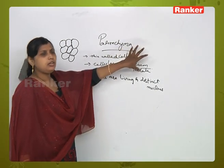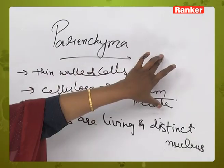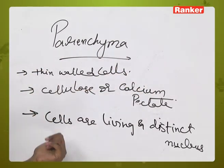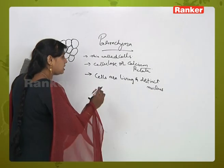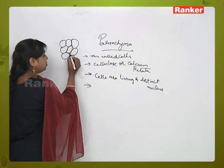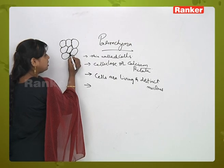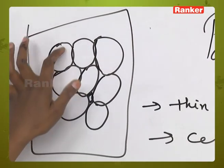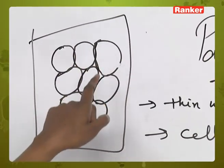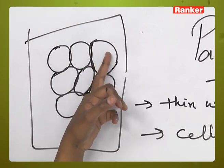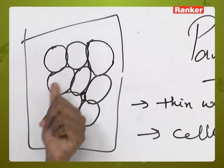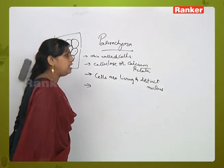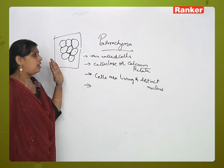Parenchyma cells are living cells and are classified as simple permanent tissues. There are few or more intercellular spaces present. This is a diagram of parenchyma tissue — the round or oval shape cells have a cell wall made up of calcium pectate or cellulose. Cells are living and have a distinct nucleus.